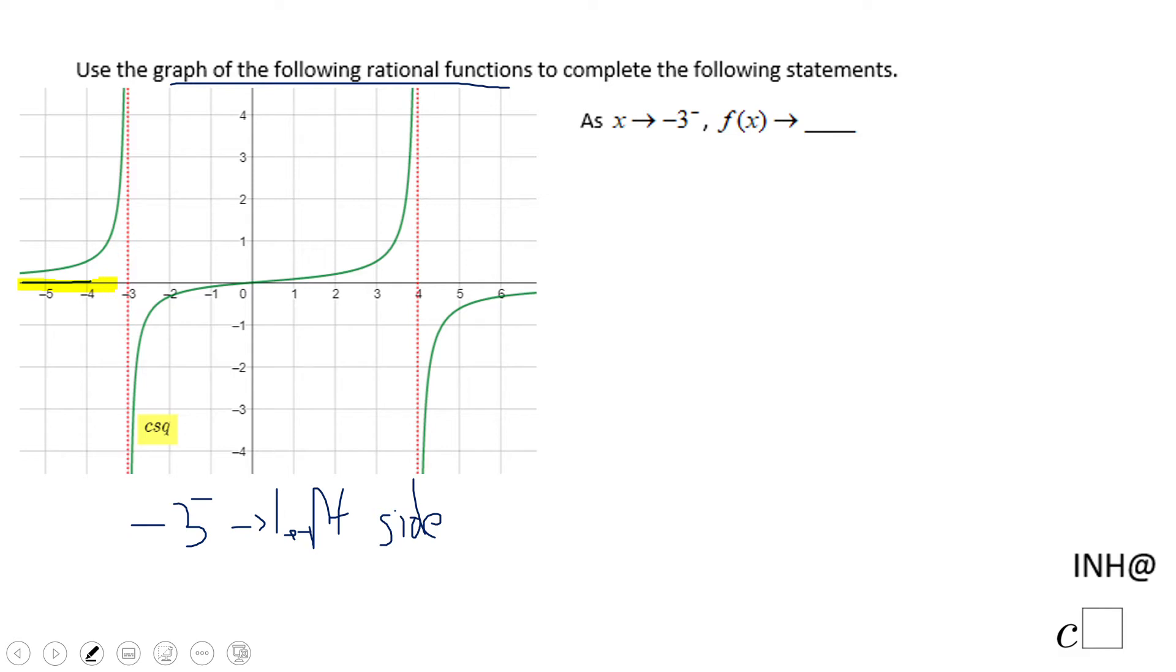And if you notice, the graph is going up, is going up like this. It's going larger, larger, larger, and larger. That means when X approaches negative three from the left, the function is getting larger and larger, positive infinity.